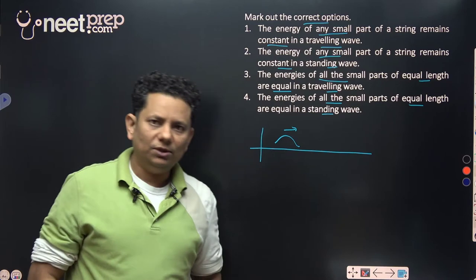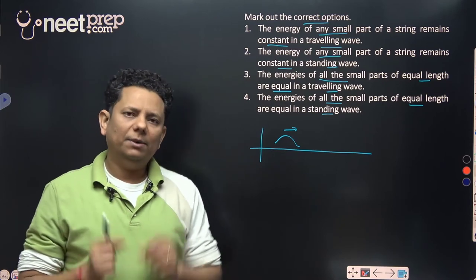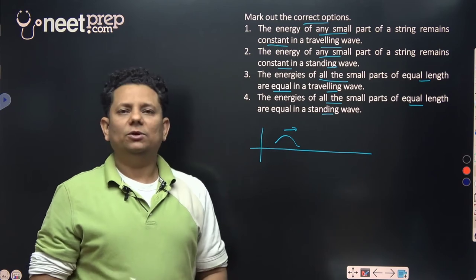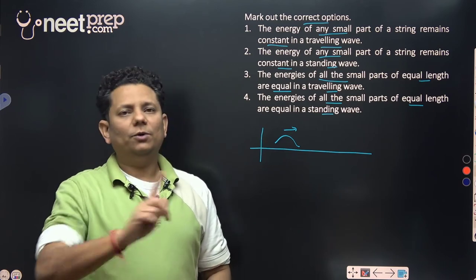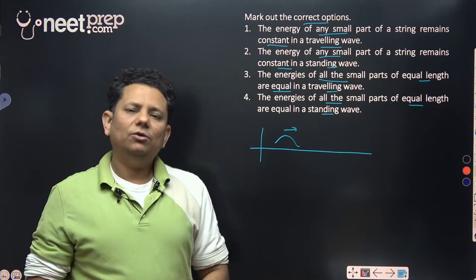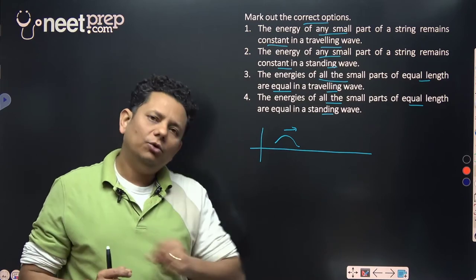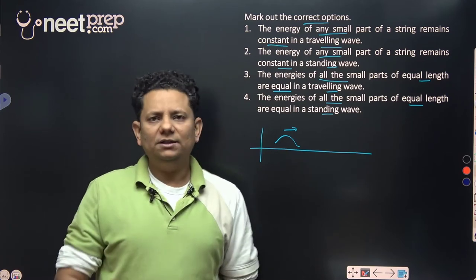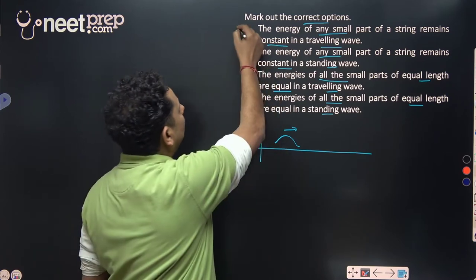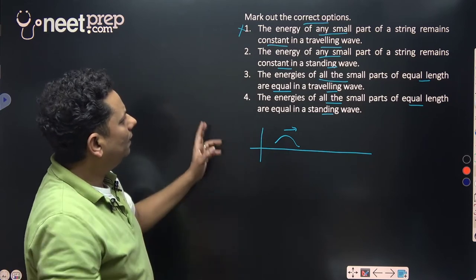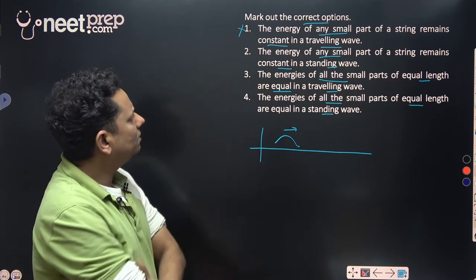In this scenario, when we talk about traveling waves, energy is not conserved. Because when kinetic energy is maximum, potential energy is also maximum. When kinetic energy is zero, potential energy is also zero. So in a traveling wave, energy is not conserved for the simple reason that energy is traveling. So the first statement is not correct.